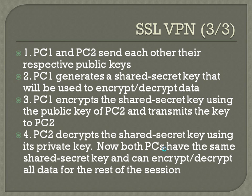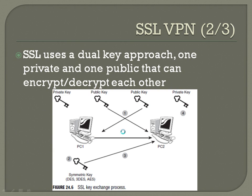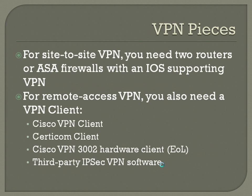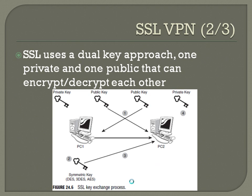It's a multi-step process that prevents someone from catching the public key you're sending across and just decrypting it. Since you're using that key to encrypt a separate key and then sending that across, it prevents that type of issue. The key that ends up being generated — used as a shared secret key for all communication thereafter — is only sent across one time and it's encrypted.